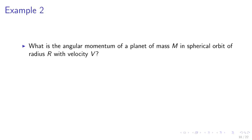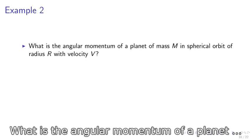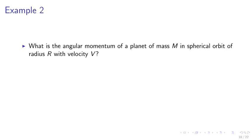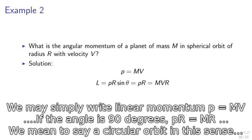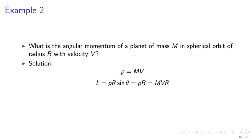Example. What is the angular momentum of a planet of mass M in a circular orbit of radius R with velocity V? The linear momentum is P equals MV. Since the orbit is circular, the angle between R and P is 90 degrees, so L equals PR equals MVR.